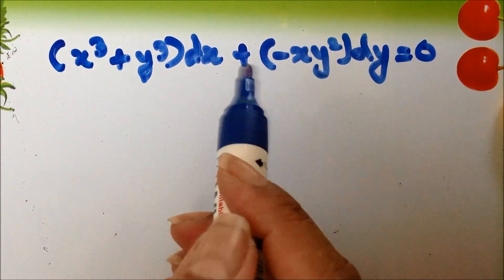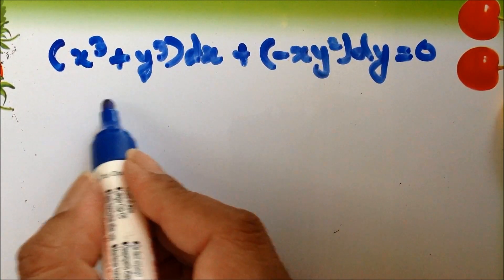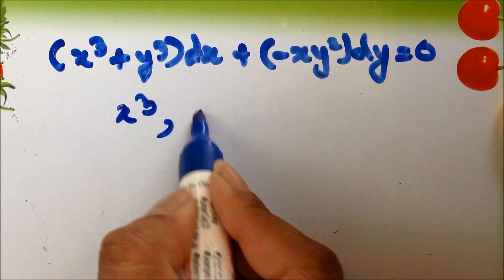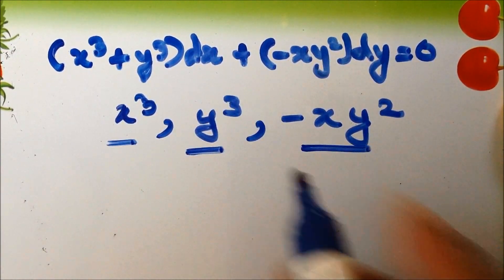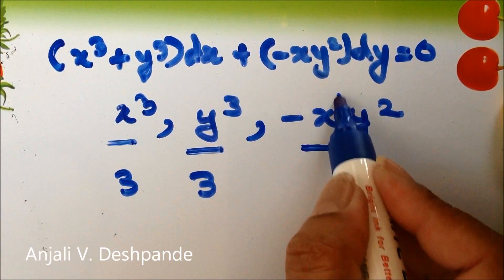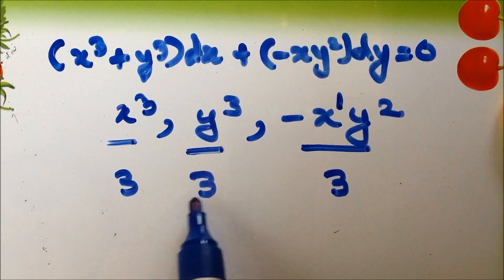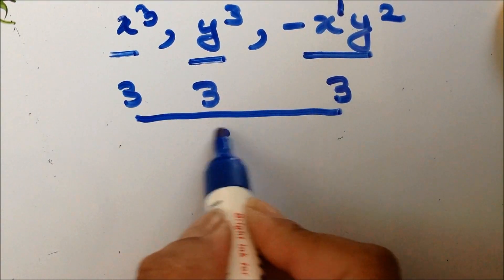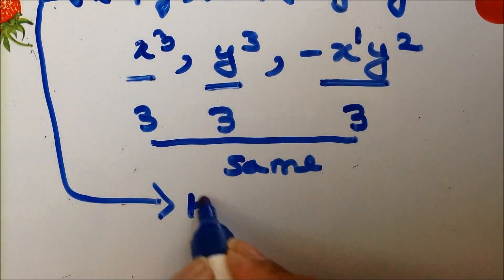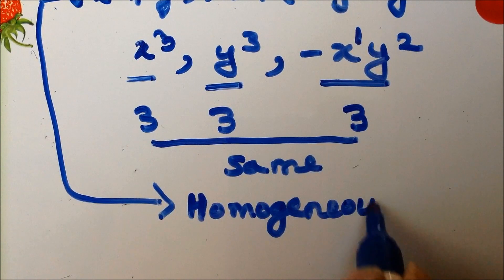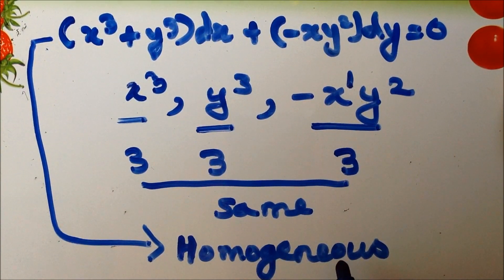Looking at the terms in the equation — x³, y³, and −xy² — the degree of each term is 3. For x³ it is 3; for −xy² it is 1+2 = 3. Since the degree of each term is the same, this is a homogeneous differential equation. So along with being inexact, it is also homogeneous, and we apply the rule for inexact homogeneous equations.